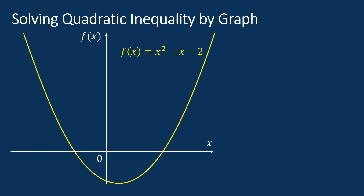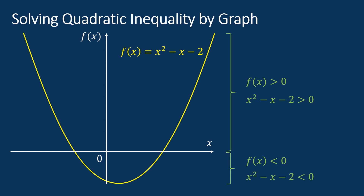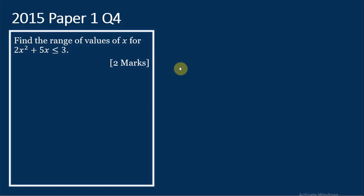Let's say we have a quadratic function f(x) equal to x squared minus x minus 2. This is a graph of the function. Above the x-axis, f(x) is greater than 0, or positive. Since f(x) equals x squared minus x minus 2, we can also conclude that at this region, x squared minus x minus 2 is greater than 0. We can also see that below the x-axis, f(x) is less than 0, or x squared minus x minus 2 is less than 0. These features of the graph will be used to solve a quadratic inequality.